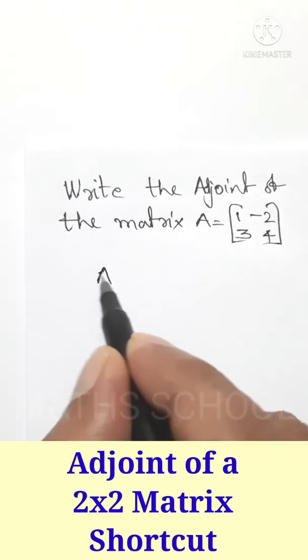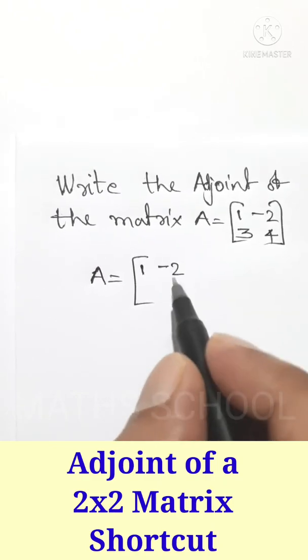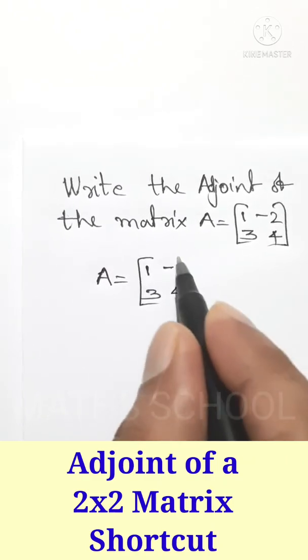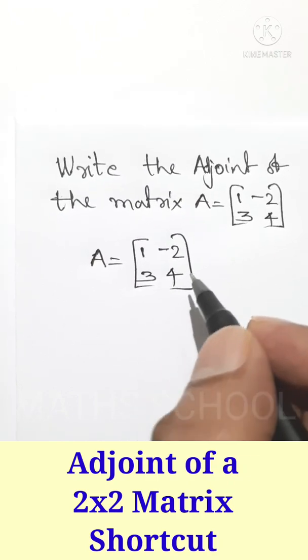Given matrix is A equal to 1, negative 2, 3, 4. This is a 2 by 2 matrix and we can write the adjoint of a 2 by 2 matrix in two steps.